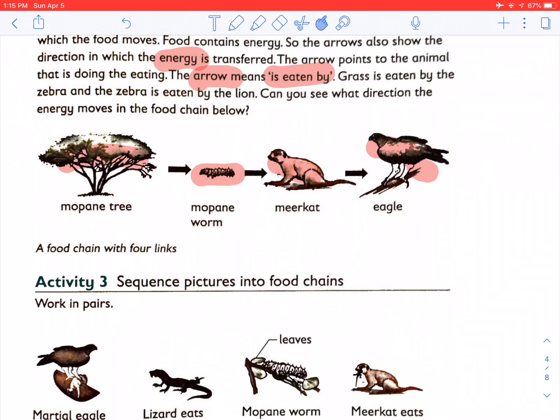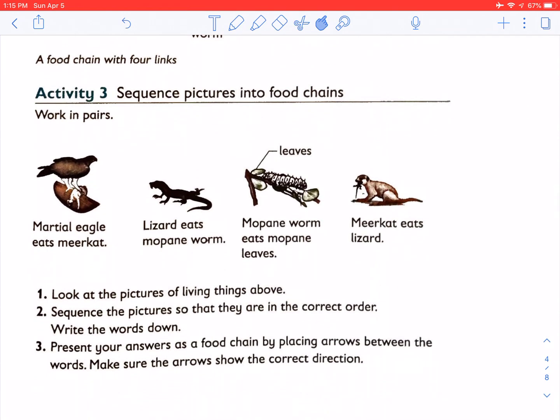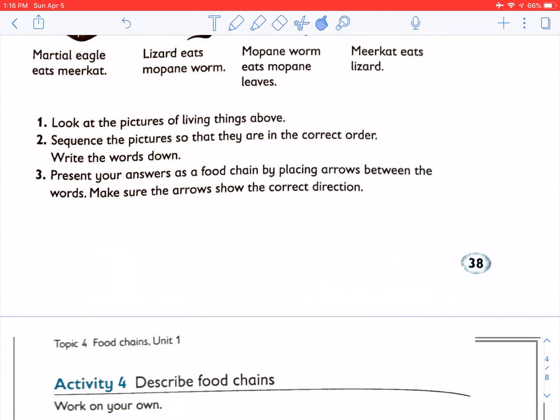Now let us do activity three. Look at the picture of the living things above. Sequence a picture so that they are in the correct order and write the words down. This work needs to be done in your notebook. Present your answers as a food chain by placing the arrows between the words. Make sure that the arrows show the correct direction.